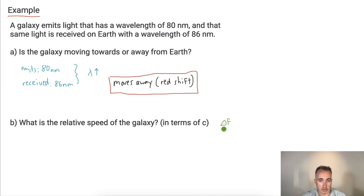So we have delta F over F equals delta lambda over lambda equals roughly V over C. How can I use this? What numbers do I know? I know something about wavelength, so I should probably use this one instead. I'll ignore this because I don't know anything about the frequency.